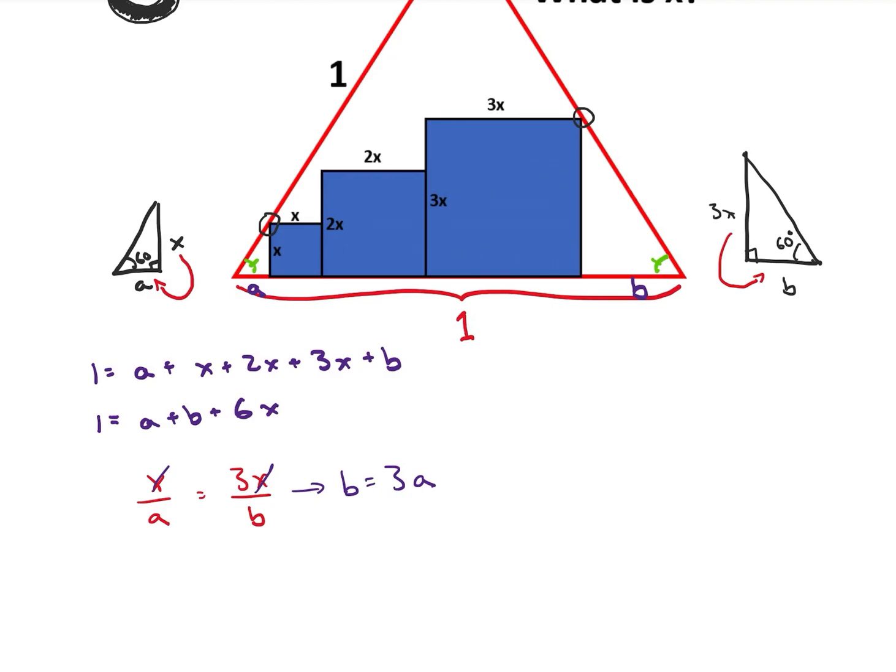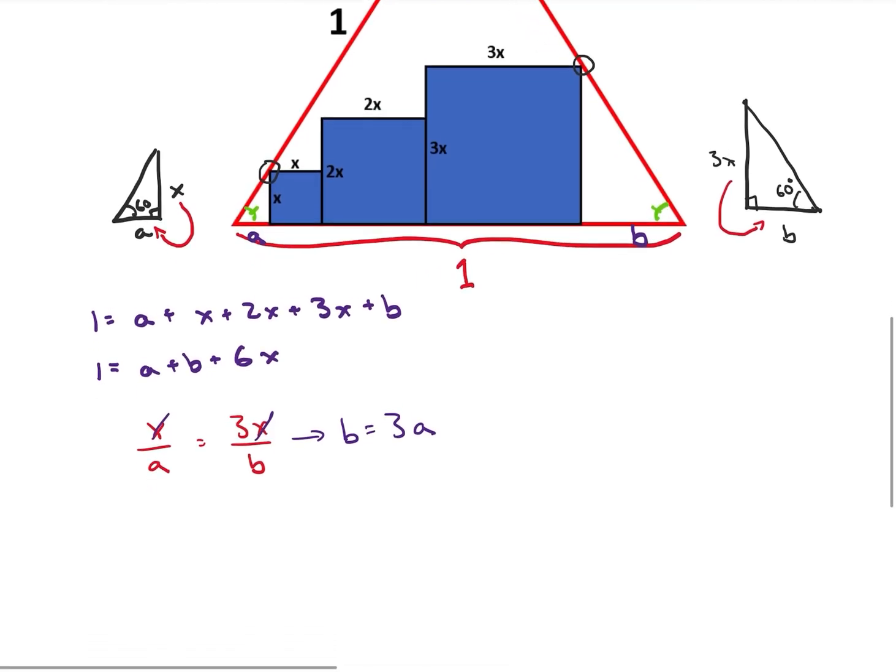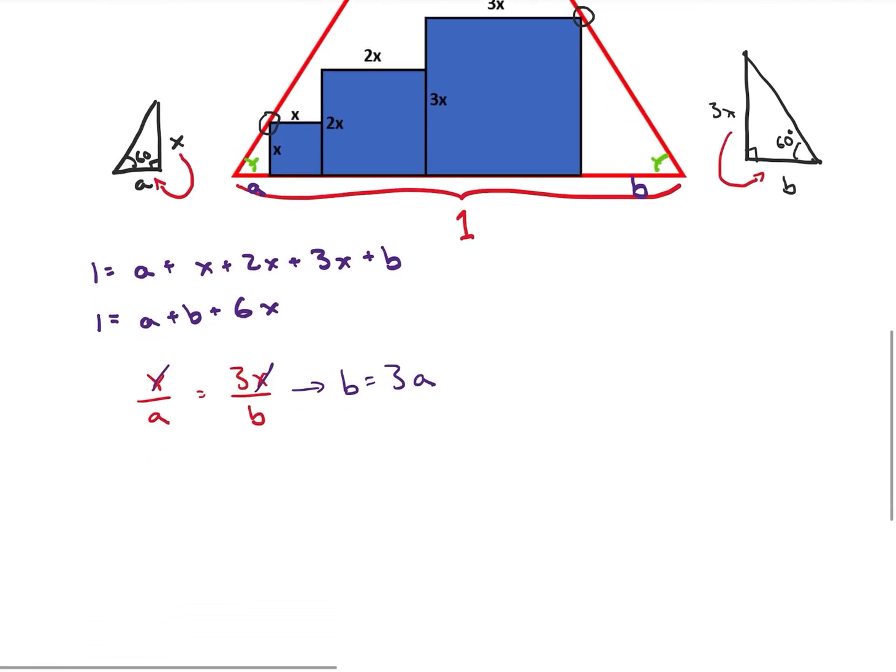So if B is equal to 3a, so now that we have that, let's go ahead and look at our equation here. So now that I know B is 3a, let's look at this triangle again.